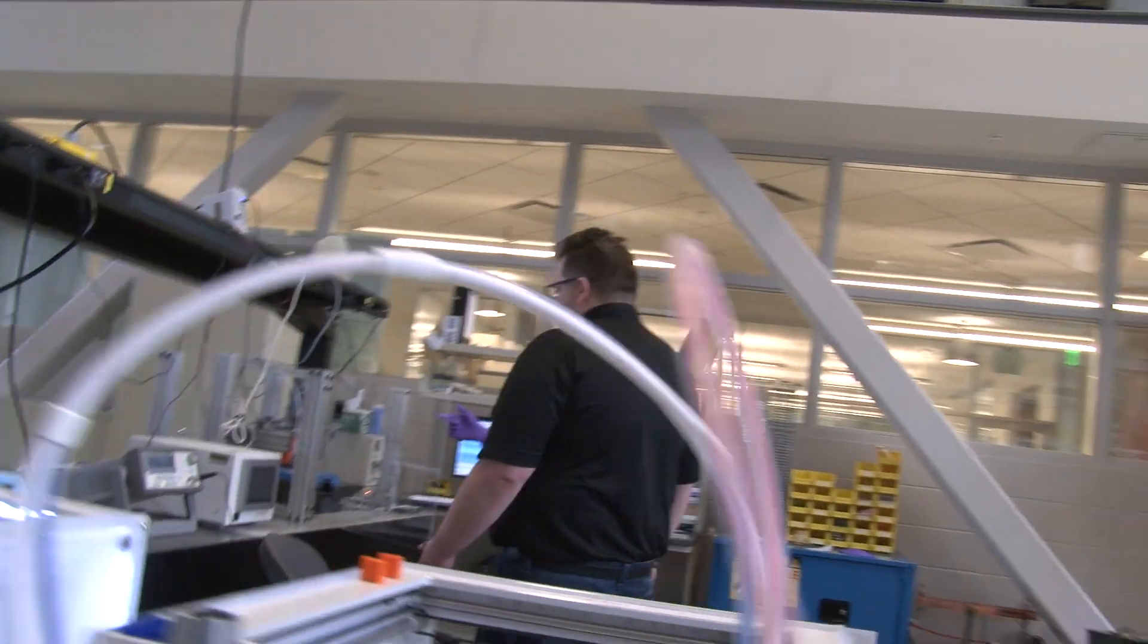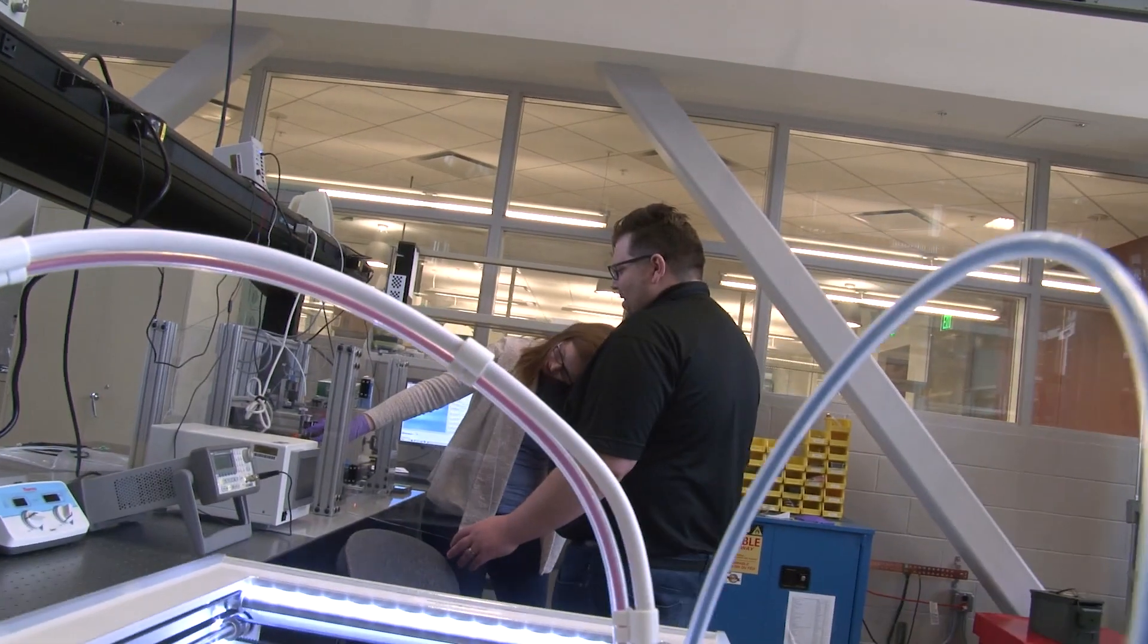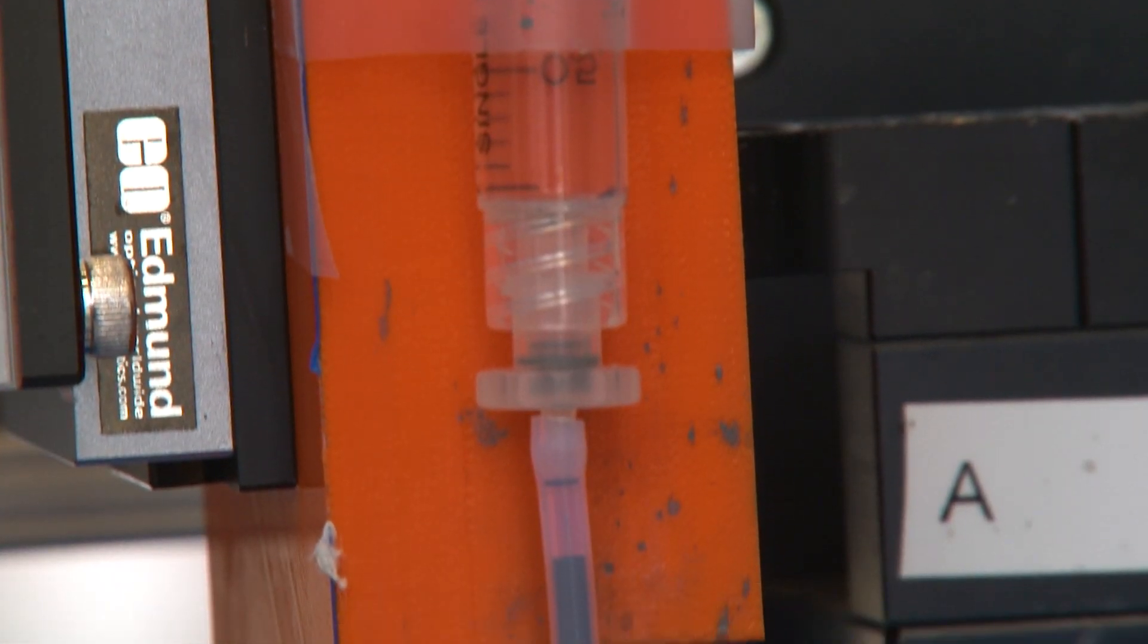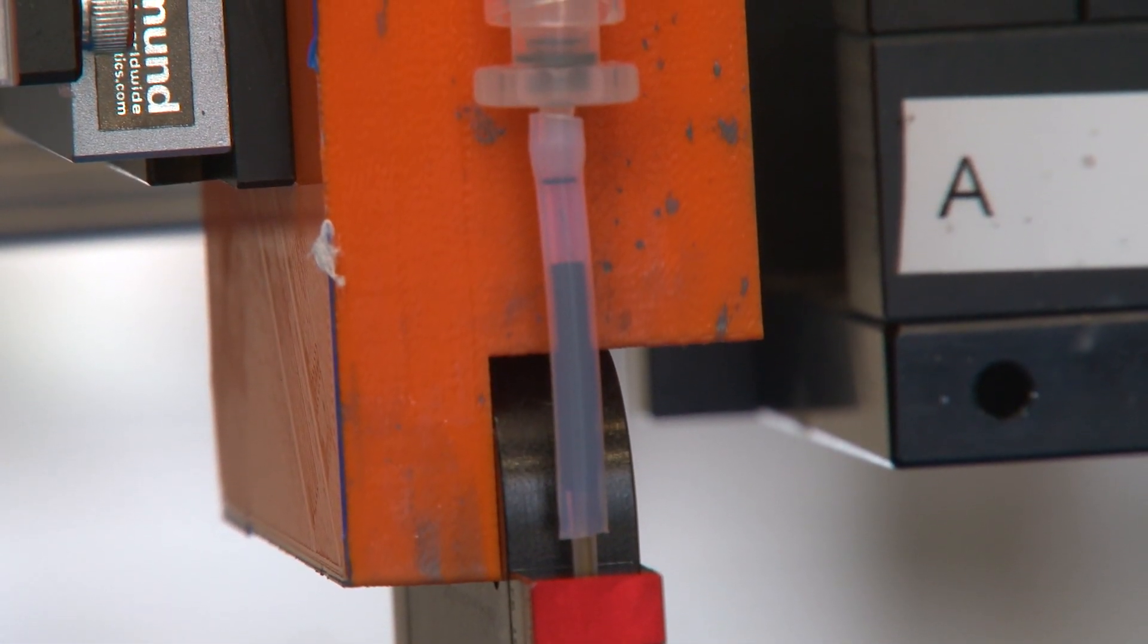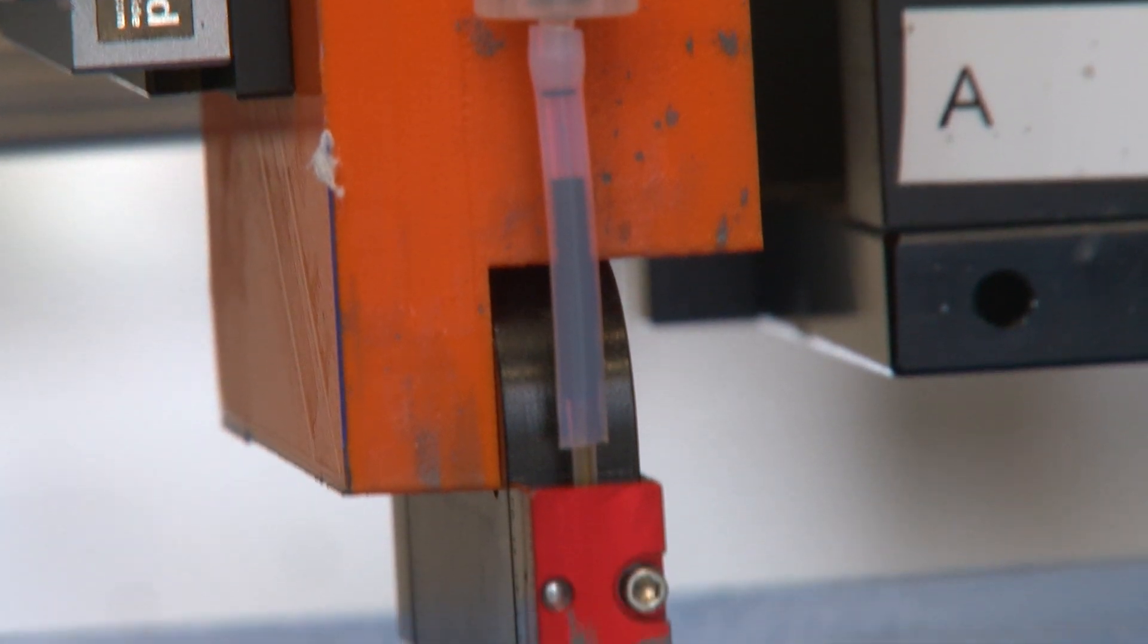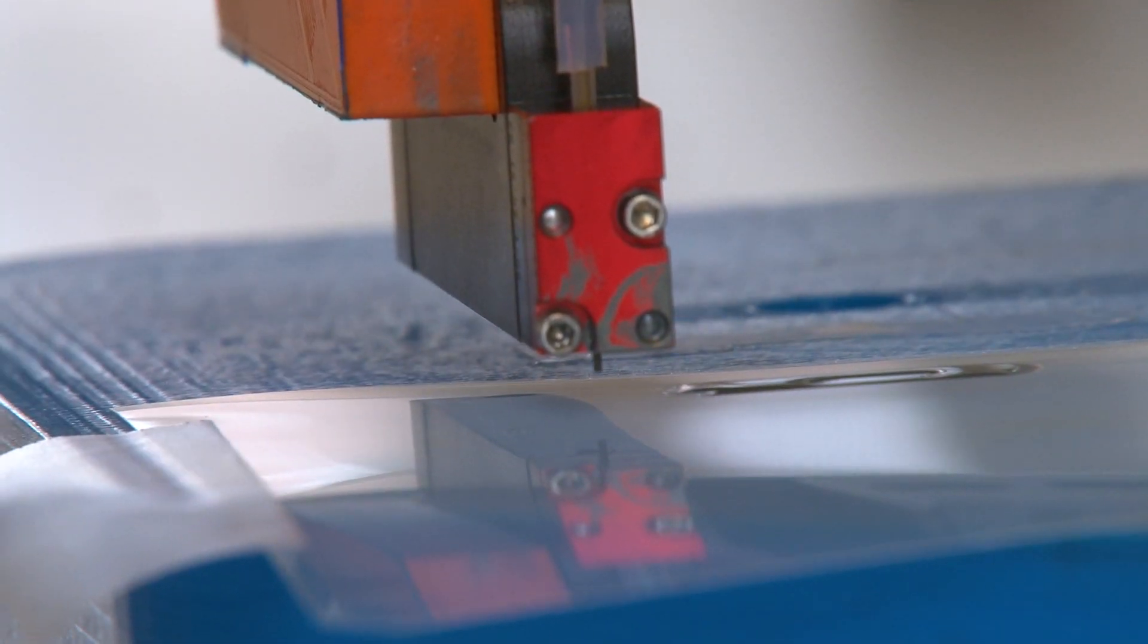The inkjet printer we use is similar to one in your home or office, just on a much smaller scale. It has a glass tube surrounded by a material that flexes when you put voltage through it. Based on the voltage, it'll flex a different amount, squeeze the glass tube, and produce droplets.